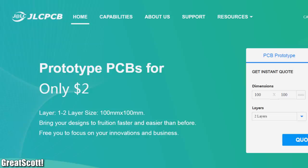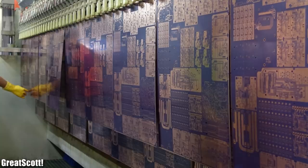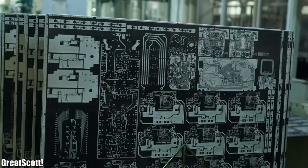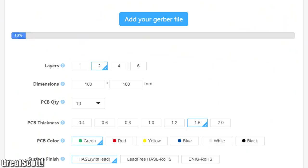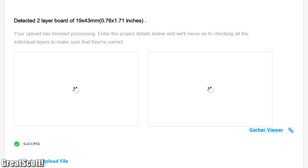This video is sponsored by JLCPCB whose new full automatic PCB batch production factory is being used since April. They produce 600,000 square meters of PCBs per month and you can get your own 2-layer prototype PCB for as low as $2.